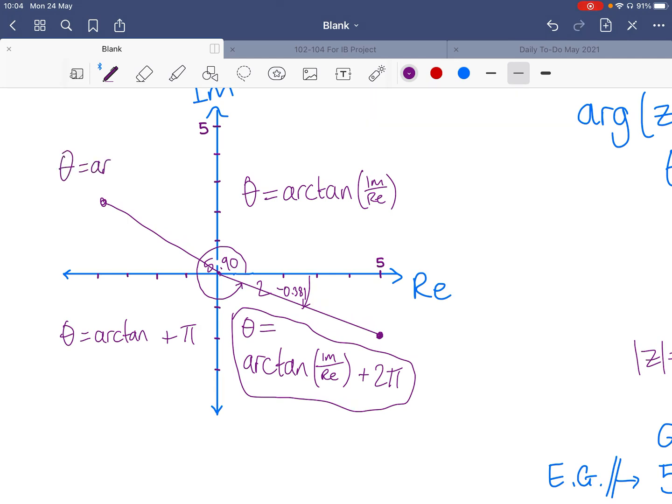So second and third quadrants add π. First quadrant, don't need to do anything, just arctan. Fourth quadrant, add 2π. If you're ever confused, just draw a very quick Argand diagram. And you'll very quickly see whether you've made a big mistake or not.